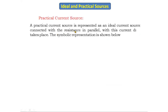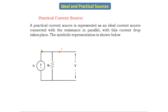Now if we see the practical current source: it is represented as an ideal current source connected in parallel with a resistance, and with this resistor a current drop takes place. The symbol of the practical current source is the ideal current source with one resistor connected in parallel. Without this resistor it is the ideal current source; once we connect a resistor in parallel with the current source, it becomes a practical current source.